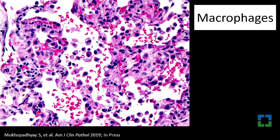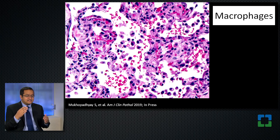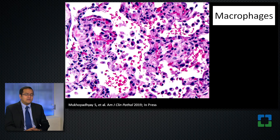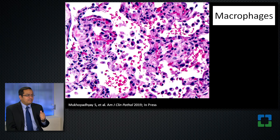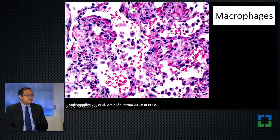The most controversial part of this pathology — which I think will engender a lot of debate in coming months, if not years — is the presence of a particular kind of cell called a macrophage. The macrophage is a cell that within the lung eats up debris, wandering within the lung to clear any debris from the lung parenchyma. In normal lungs, there aren't too many macrophages. But in vaping-associated pulmonary illness, some cases have a lot of macrophages within the alveoli — the cells within the airspaces, as the arrows indicate.